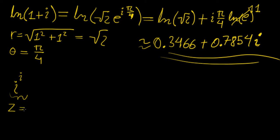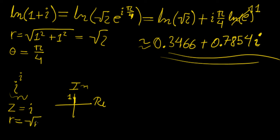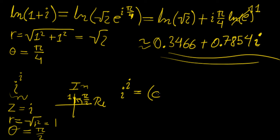Let z = i. If we plot this on the Argand diagram — real axis, imaginary axis — this is just one unit on the imaginary axis. So the magnitude of this complex number is √(1²) = 1, and the angle is π/2 since it's perpendicular to the real axis. So we can write i = 1 · e^(iπ/2), and then i^i = e^(iπ/2 · i) = e^(i²π/2). Since i² = −1, this gives e^(−π/2).